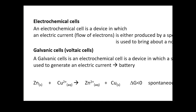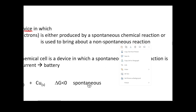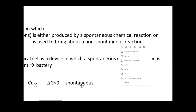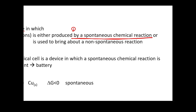An electrochemical cell is a device used to produce electric currents. This current can either be produced by spontaneous chemical reactions, or you can use electric currents to drive non-spontaneous reactions. So basically, electrochemical cells can do two things: one is to produce electric currents through spontaneous chemical reactions.